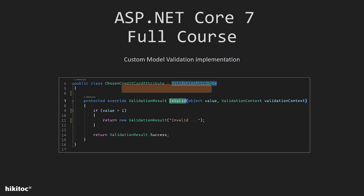The second item we need is the IsValid method. This method is part of the ValidationAttribute class. When creating a custom validation attribute, we override this method to provide our own validation logic. The purpose of the IsValid method is to implement custom validation logic. When an instance of an object is being validated, the framework calls this method to determine whether the value of a specific property or parameter is valid based on the rules defined in our custom attribute.